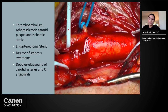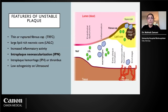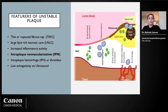This is why research in carotid imaging has focused on identifying unstable or vulnerable plaques making patients at future risk of ipsilateral ischemic stroke. Earlier histopathological studies have identified certain features related to unstable plaques: thin or ruptured fibrous cap, large lipid-rich necrotic core, increased inflammatory activity, intraplaque neovascularization (IPN), and subsequent intraplaque hemorrhage or thrombus. Large lipid-rich necrotic core, increased inflammatory activity, IPN, and intraplaque hemorrhage contribute to low echogenicity on conventional ultrasound.